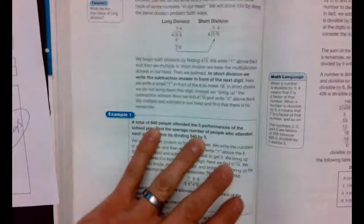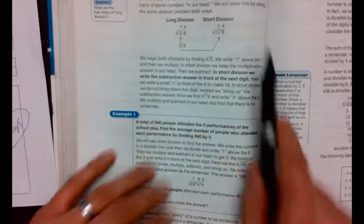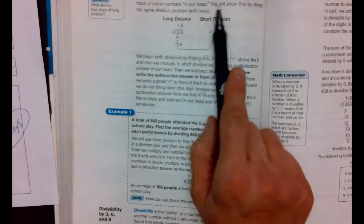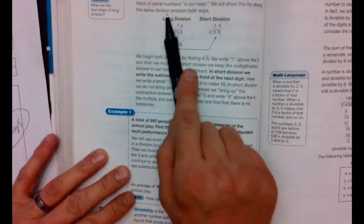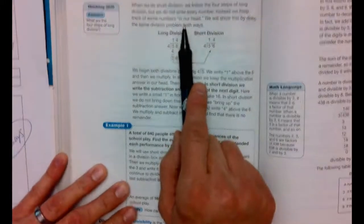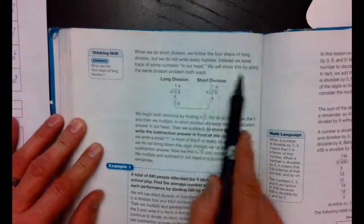When we do short division, we follow the four steps of long division, but we do not write every number. Instead, we keep track of some of the numbers in our heads. We will show this by doing the same division problem both ways.